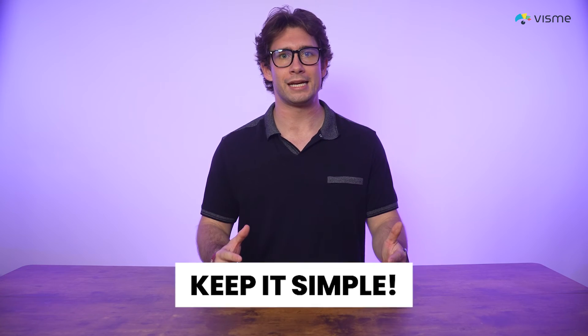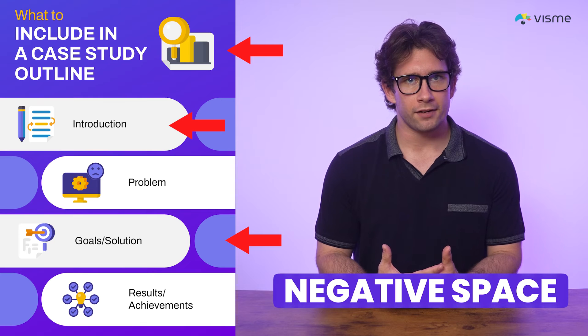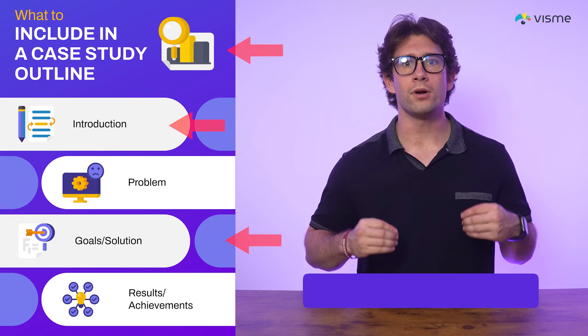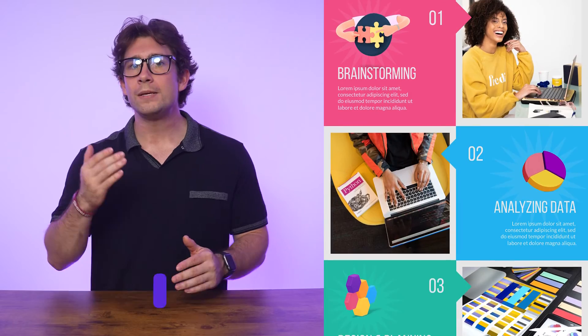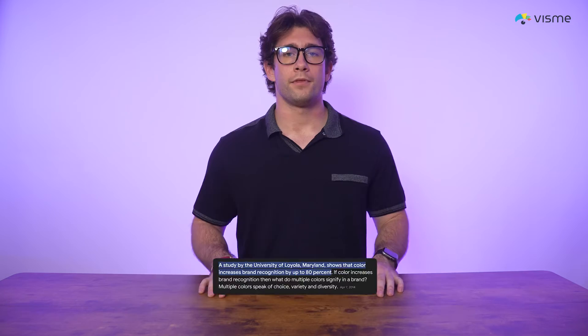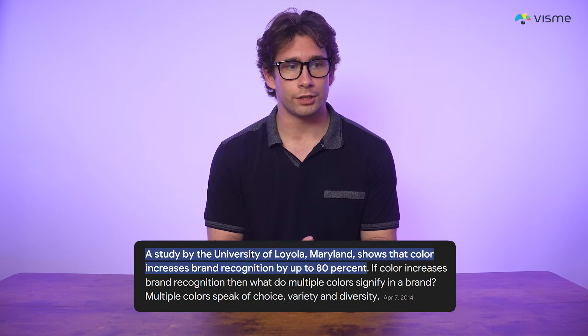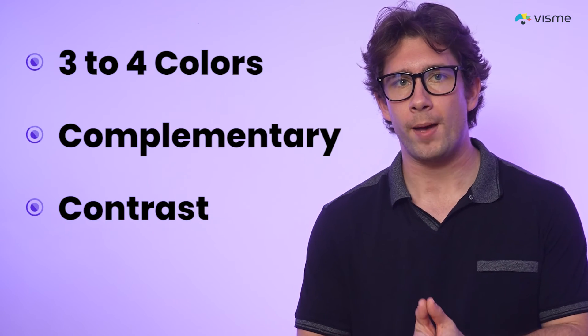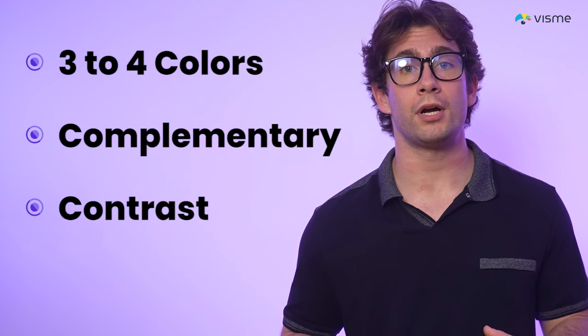Now that you know the types of infographics, it's essential to understand the design elements that create a professional and effective infographic. First, please focus on simplicity — one of the most critical aspects of good design is keeping the composition simple and easy to follow. Avoid overcrowding your layout with too much text or too many visuals. Using negative space effectively ensures each element stands out. You also need to pick the right color scheme. Color isn't just for aesthetics — it plays a significant role in setting the mood and guiding viewers' attention. The Color Marketing Group states that color can increase brand recognition by up to 80%, so stick to a cohesive palette of three to four colors that complement each other.